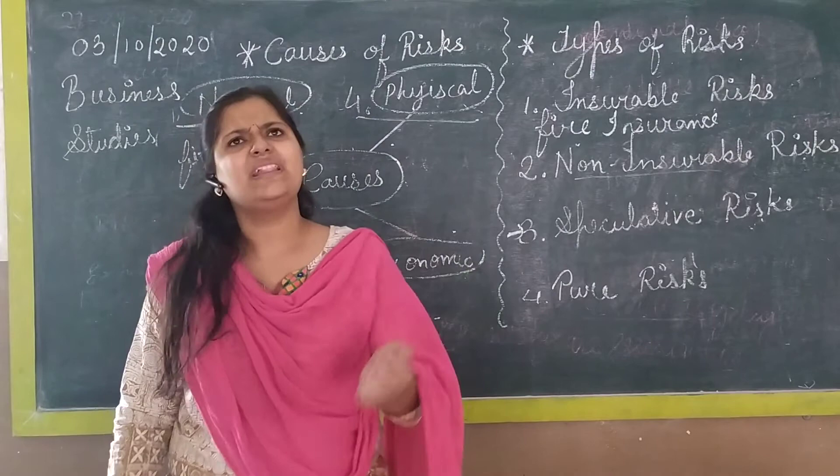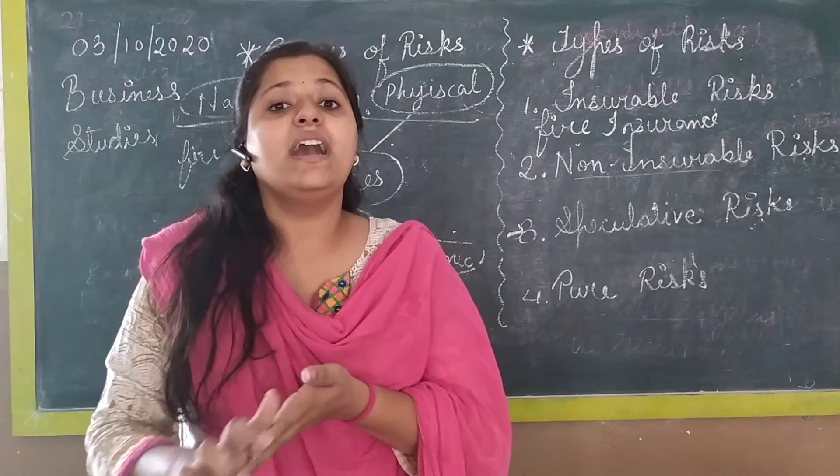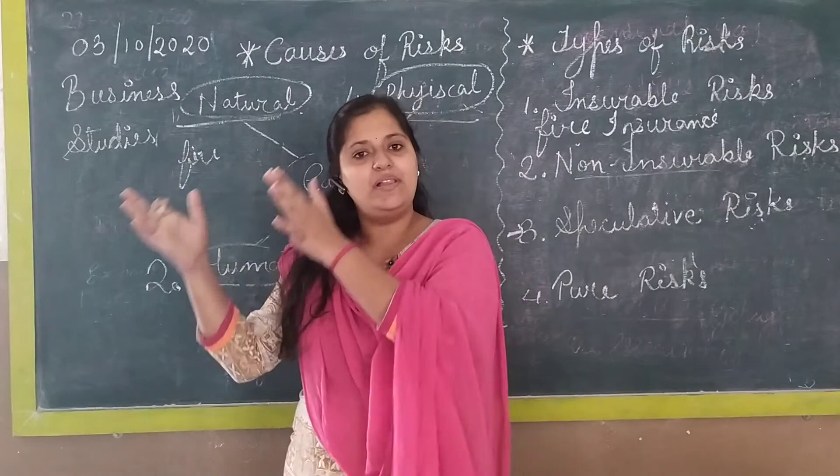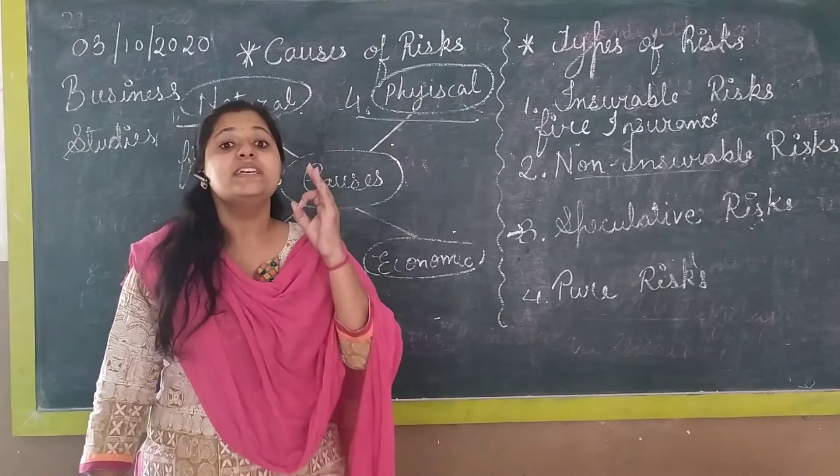The second type is non-insurable risk. This means risks for which you cannot take insurance — you cannot recover your loss through an insurance policy. We call these non-insurable risks. Human causes and economic causes fall under this category.